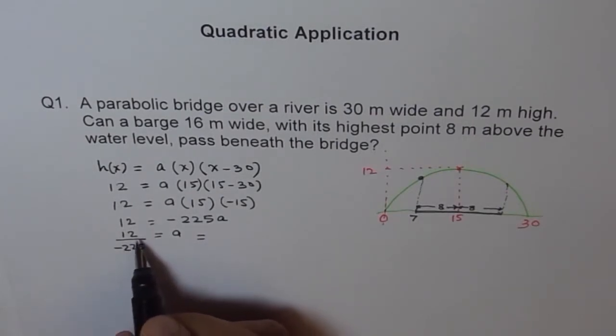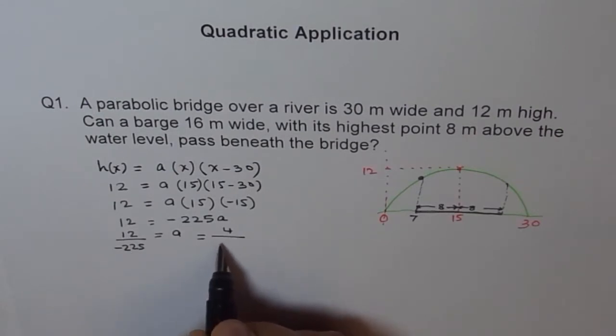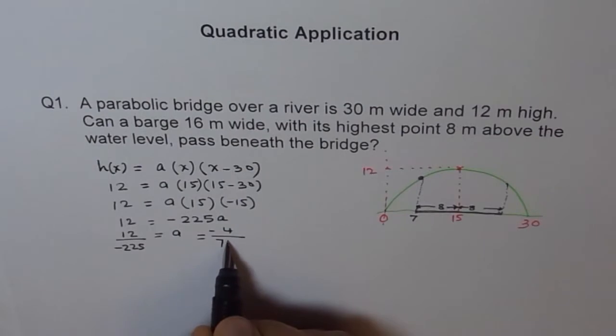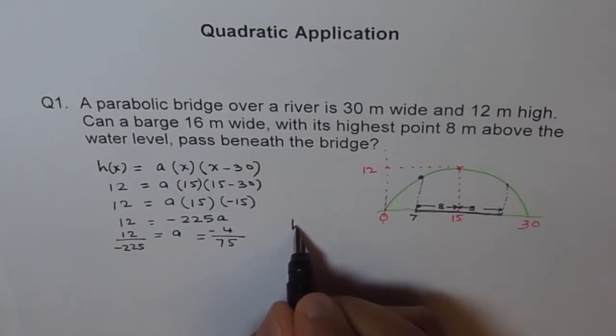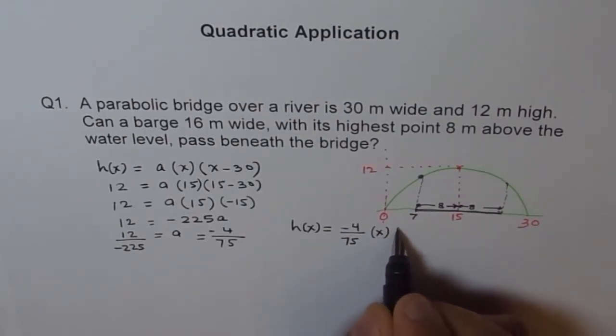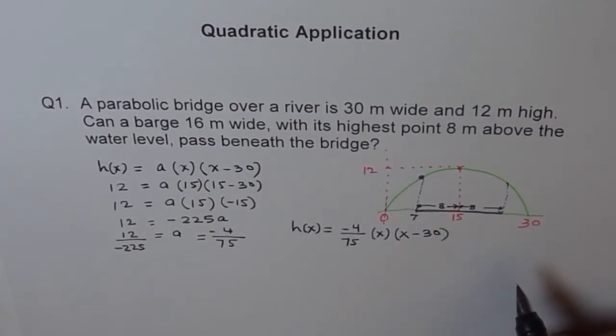You can divide both by 3. So you get 4 over 3 times 7 is 21, let me write minus here, 3 times 7 is 21 and 15 is 5. Therefore, what is our function? So we can write our function now as H of X is equal to minus 4 over 75 times X times X minus 30.